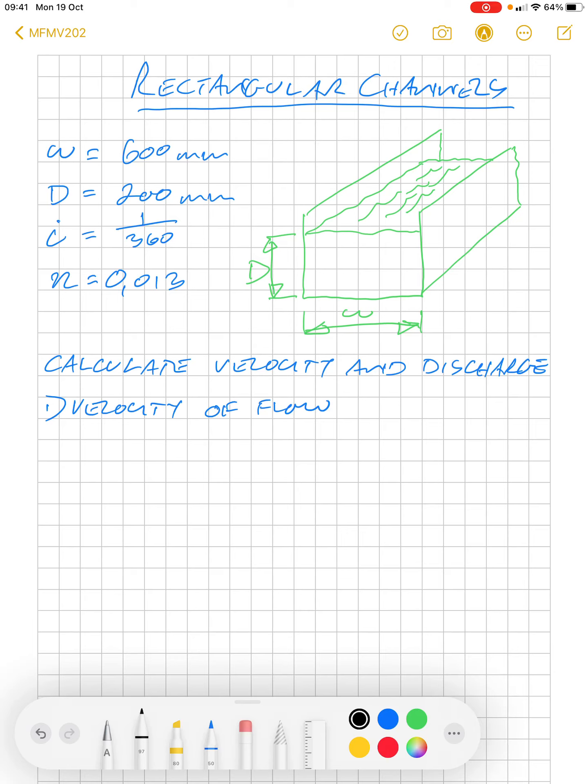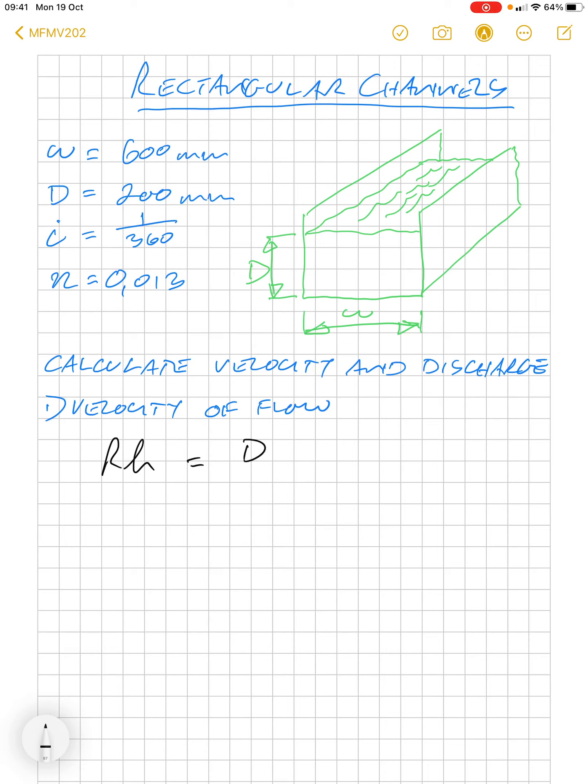First, to find the velocity of flow, we need our hydraulic mean radius. That is Rh equals dw divided by 2d plus w. That is 0.2 times 0.6 divided by 2 times 0.2 plus 0.6, which equals 0.12 as our mean hydraulic radius.